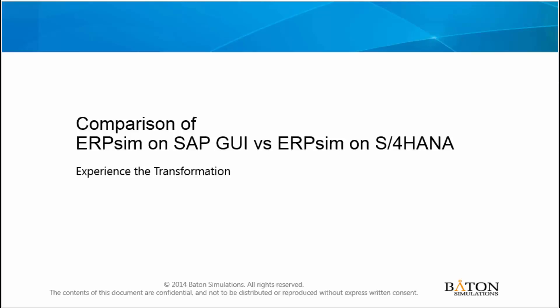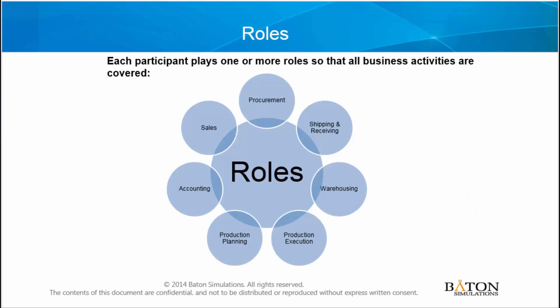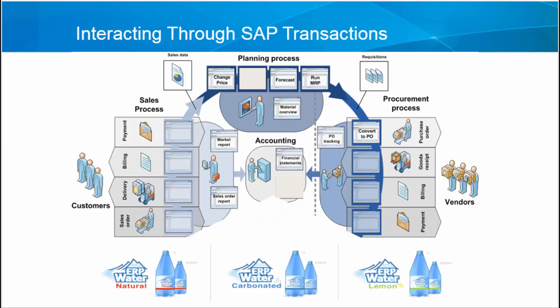Welcome to comparing ERP SIM running on SAP GUI vs ERP SIM running on S4HANA. We will be using the ERP SIM distribution game where teams manage companies that sell bottled water. Teams are assigned roles such as procurement, sales, and accounting. The players manage a full cash-to-cash business cycle with many processes automated by the simulation.